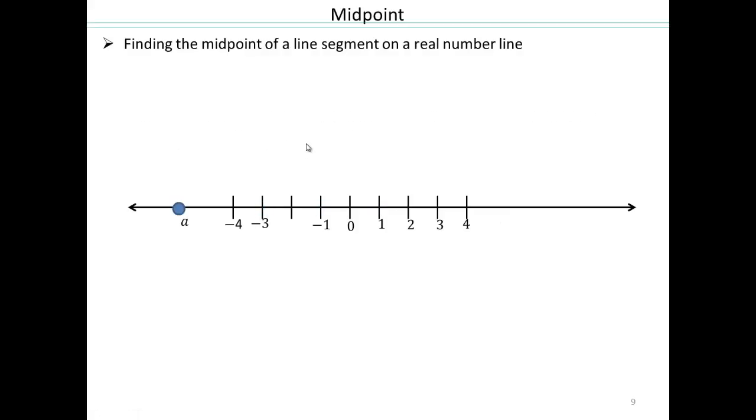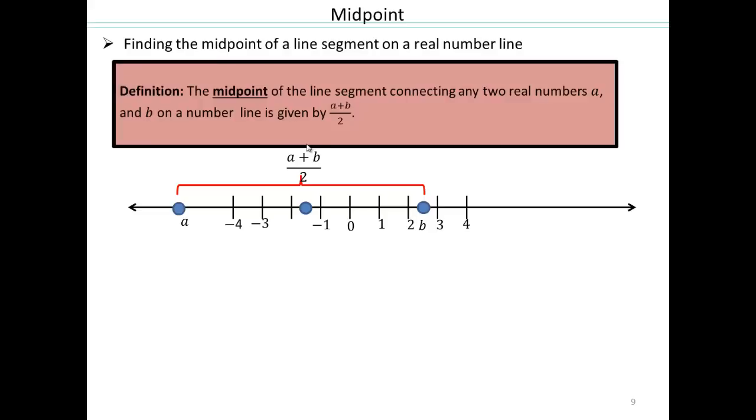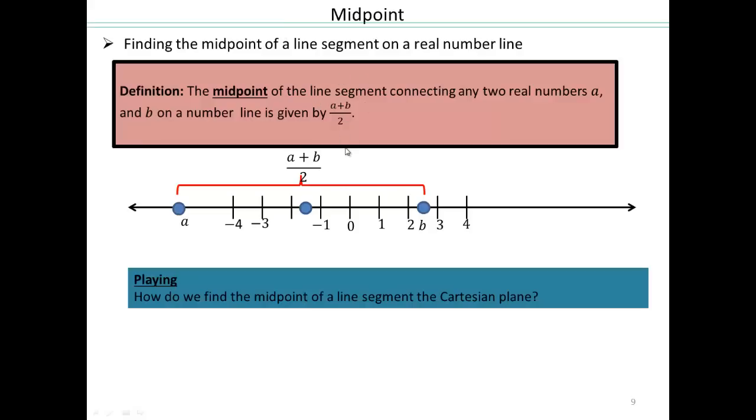All right, so what if I give you a point A here and a point B there? What do you think would be the average? Well, or midpoint, it would be right there. You take the 2, add them together, half of that. So midpoint formula for two real numbers, A and B on a number line is given by A plus B over 2.